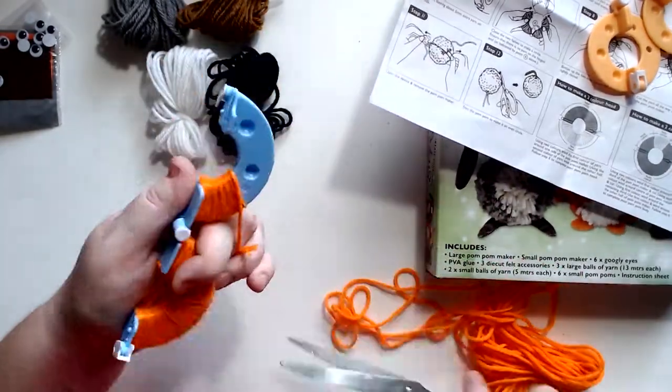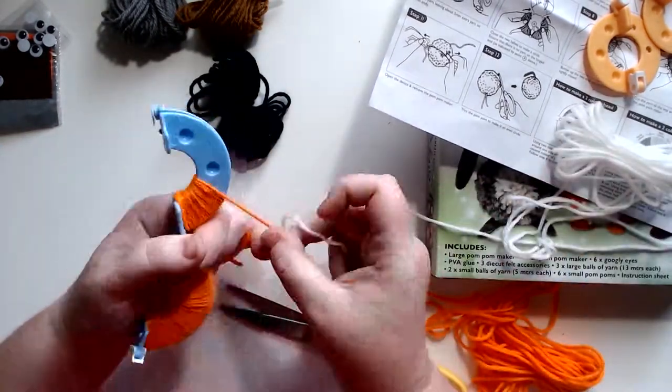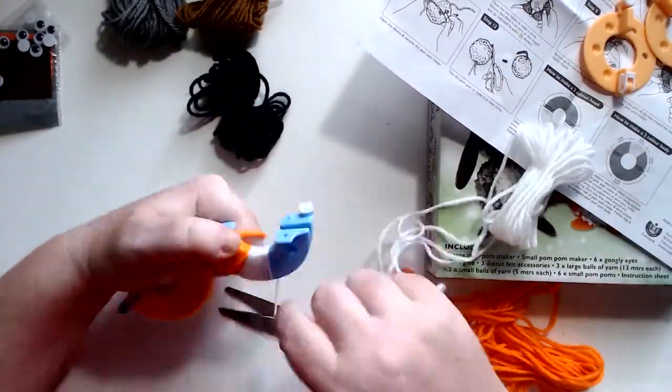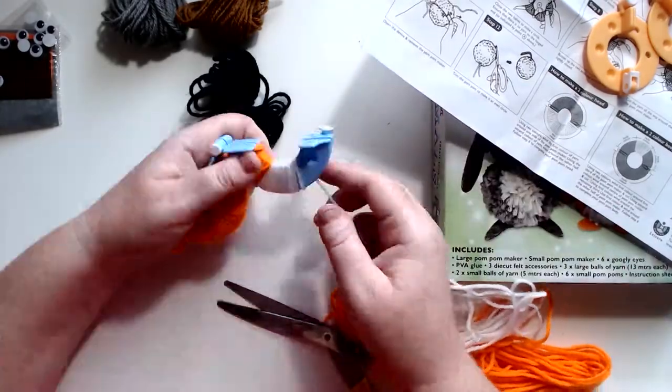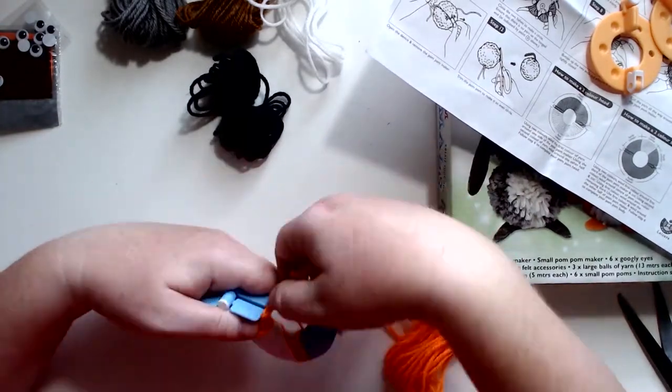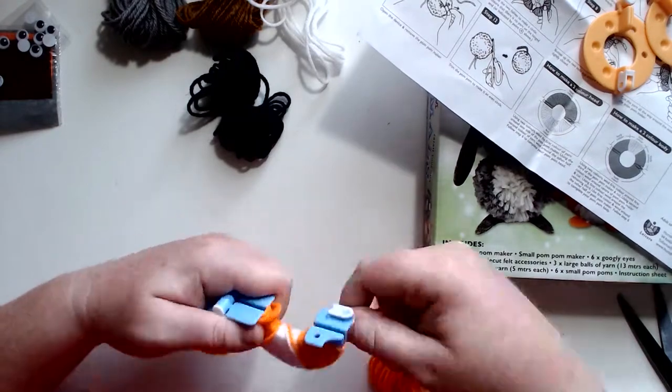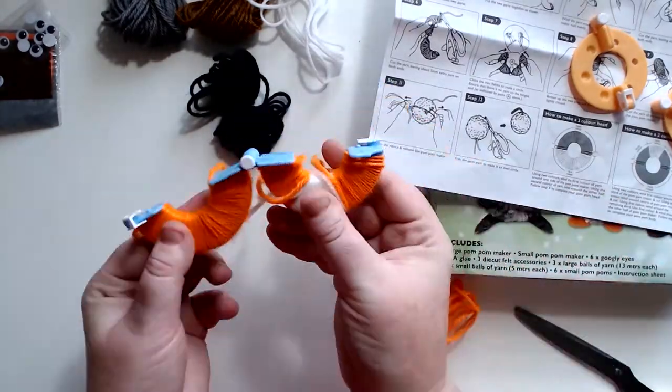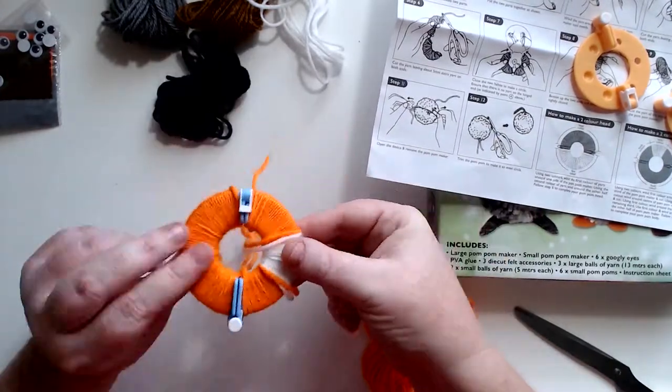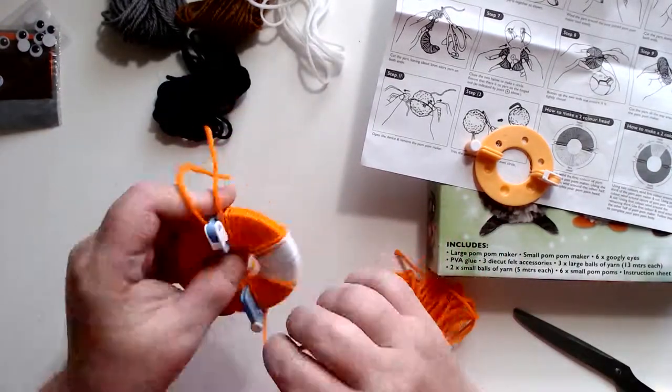Wrap it nice and thickly so you get a nice fluffy pom-pom. As you see here I'm grabbing some white and I'm gonna be wrapping that around in the middle just to give him a little bit of a white belly. The instructions explain to do about a third in orange, then do about a third in white, and then do the other third in orange. When you tie it all together it'll become like a little fuzzy white spot in the middle. So let's clip that together, and I found if you clip it together and then you just make sure that you hold the strands as you cut, it seems to turn out pretty good.